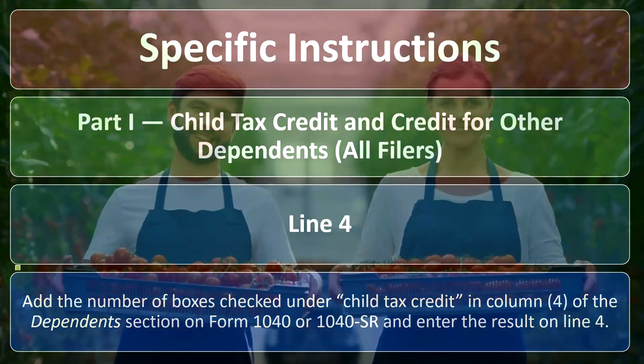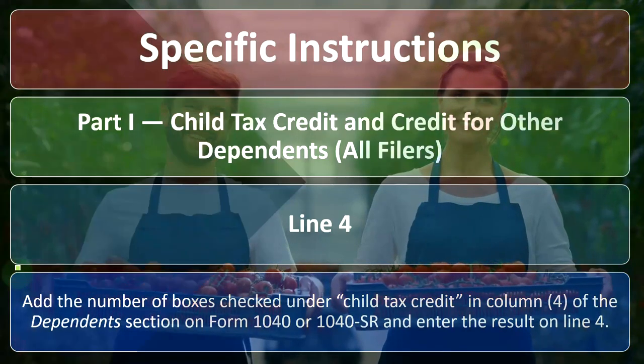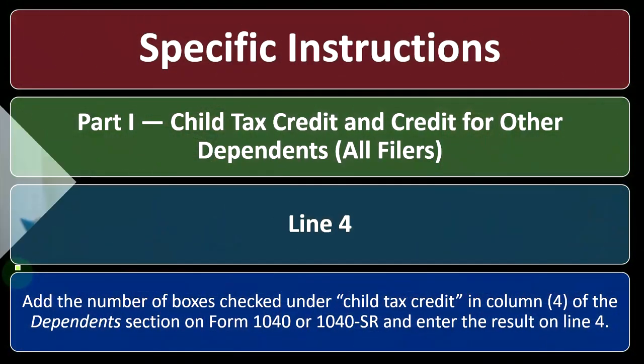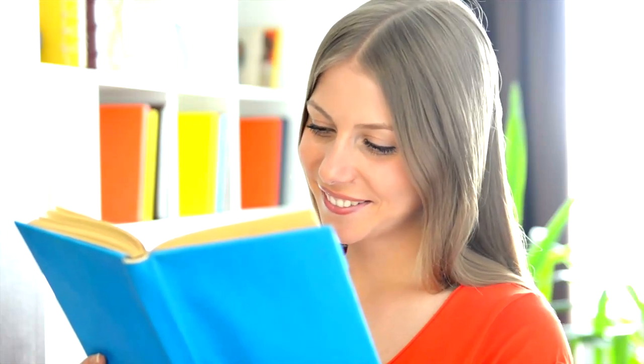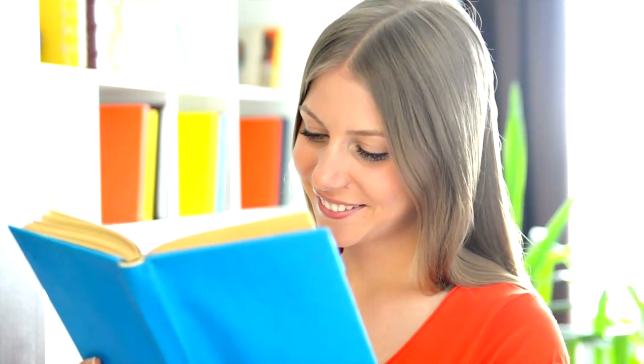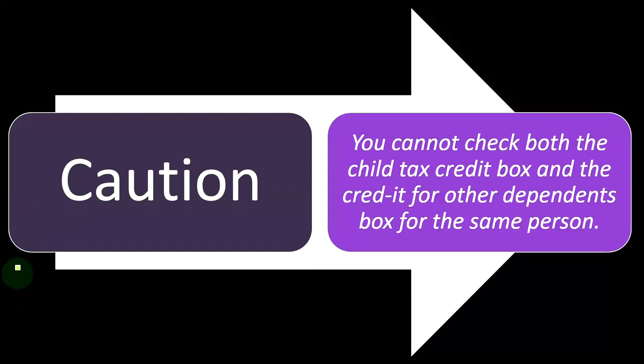You can't have both boxes checked — just one or the other. On page two, you can interpret what's going to happen with the calculation for the credits just by glancing at page one and whether you checked the box for child tax credit or other dependent next to your dependents.